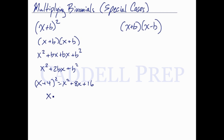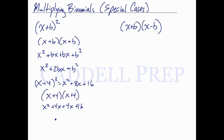And if I do the math, I'll see that that actually does work out. So x times x is x squared, x times 4 is 4x, 4 times x is 4x, and 4 times 4 is 16. Combine these like terms: x squared plus 8x plus 16. So it's always going to come out to be like this.